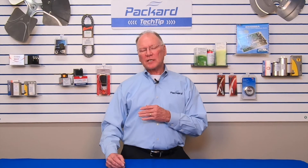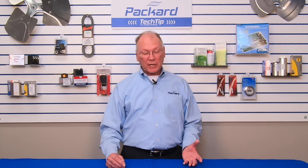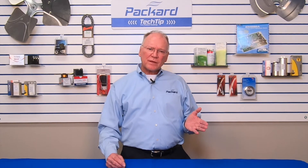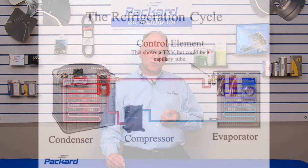That refrigerant is pumped into the condensing unit and then comes out of the condensing unit. You'll see a little device before the evaporator — that device in this case is the TXV, the thermostatic expansion valve, though it could be a capillary tube in some systems. Then, when the refrigerant gets into the evaporator, the red changes to blue.